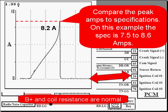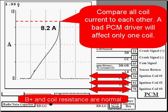You got to PCM testing because you were testing the ignition system's circuits. That means we assume that B+ and coil resistance have been checked and they're normal from this point on. The PCM is going to ground the ignition coil to turn it on. If current draw is lower than normal, you can suspect the PCM.